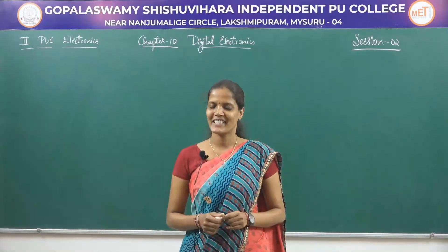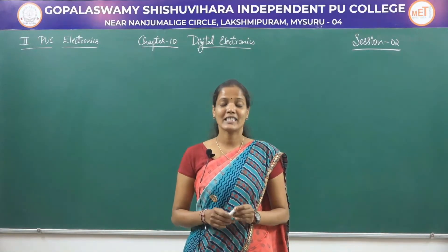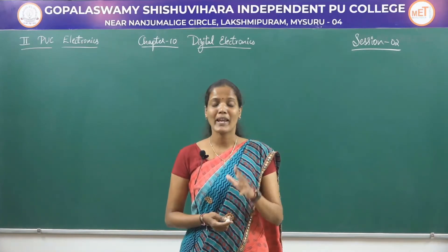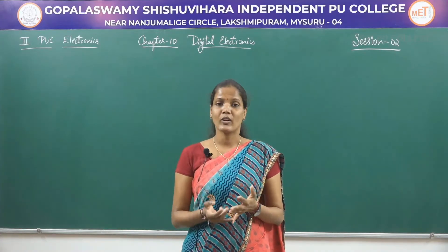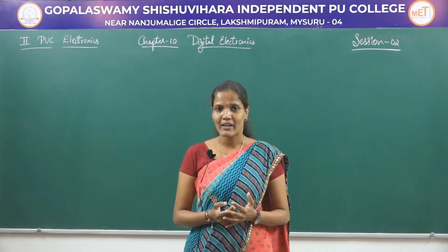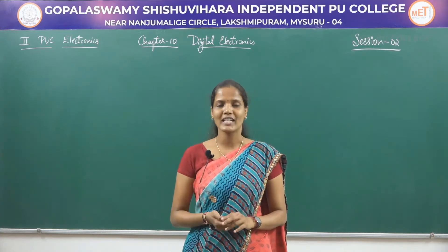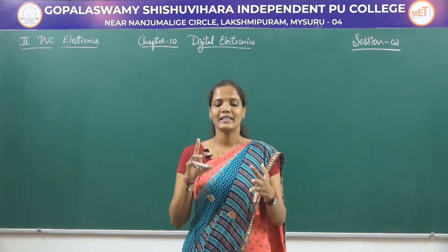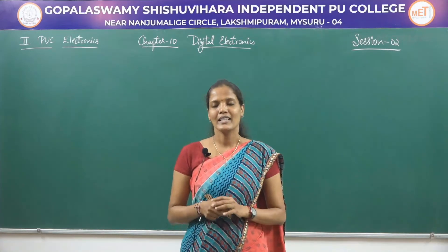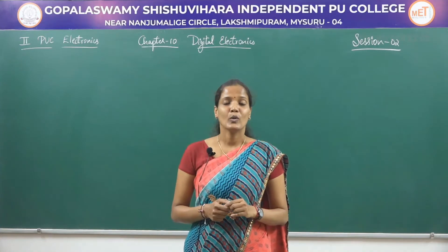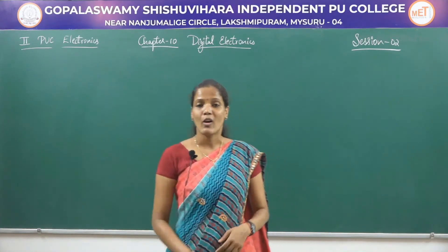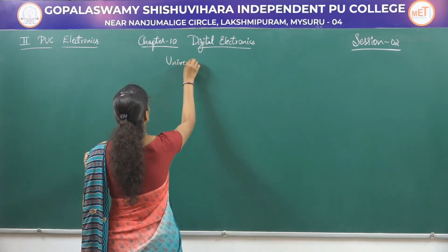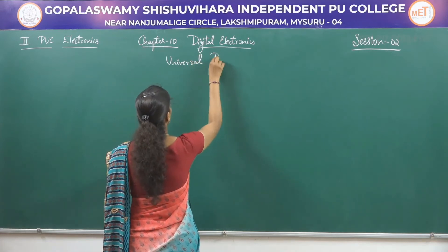Hello everyone, welcome back to our channel GSAPUC Mysore. This is the second session of the 10th chapter, Digital Electronics. In the last session, we discussed the basics of this chapter — the different types of gates available. There are 7 different logic gates, and we dealt with the logical diagram, truth table, and logical expression of these 7 different logic gates. In today's session, we will be dealing with the universal property of a NAND gate. NAND and NOR are called the universal gates.